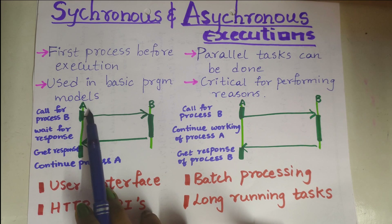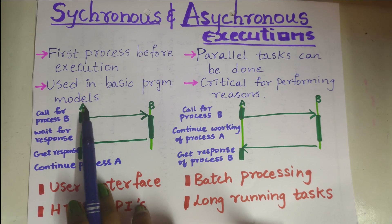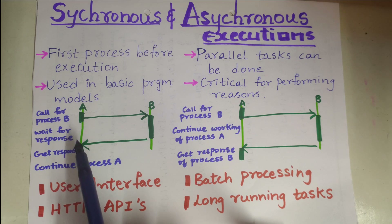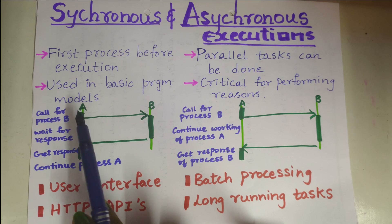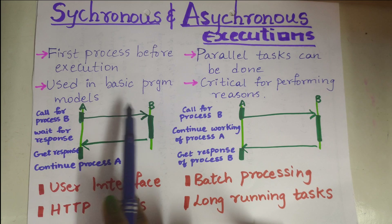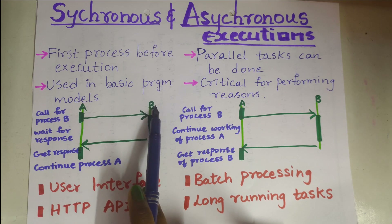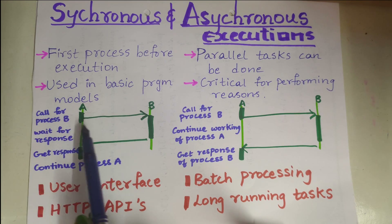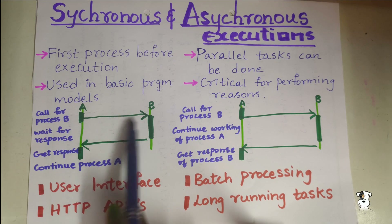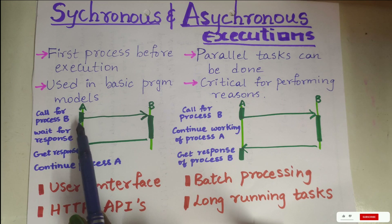For example, let A be a source and B be a destination. If A is already performing a process and wants to call process B, in synchronous execution it needs to wait for the response from B before it can continue with process A.